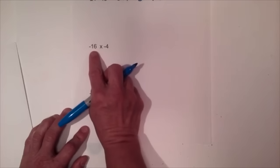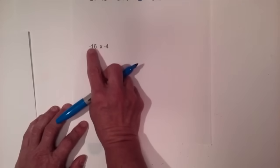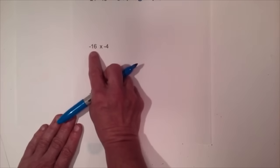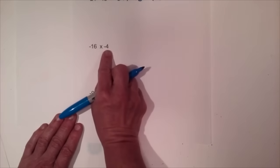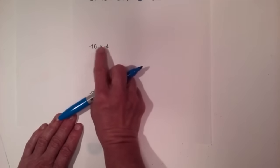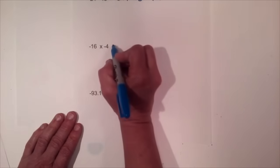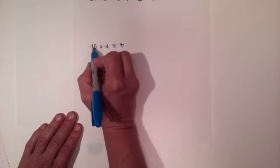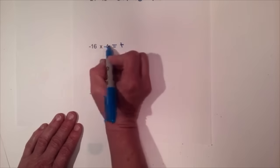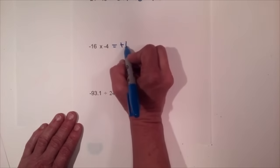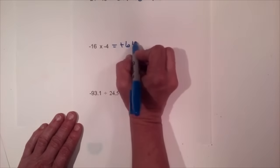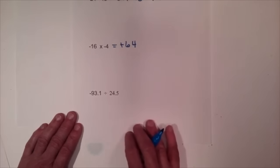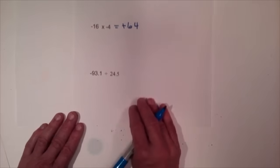Let's look at multiplying. If you multiply two negatives, you get a positive — a negative times a negative is a positive. Four times sixteen is sixty-four, so that's a positive sixty-four.